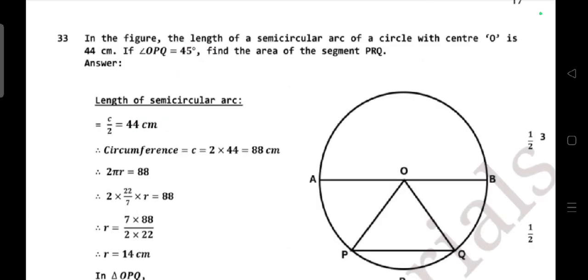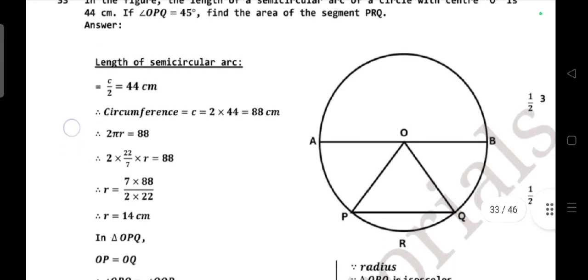Question number 33: in the given figure, the length of a semicircle arc of a circle with center O is 44 cm. If angle OPQ = 45°, find the area of segment PRQ.